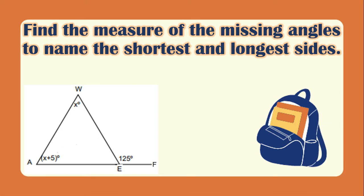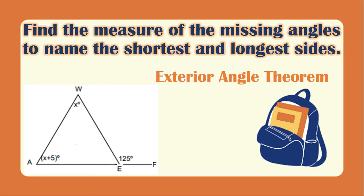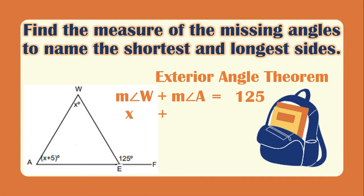Let's have another example. We need to find the value of x, but here we apply the exterior angle theorem: if we add the two remote interior angles we get the exterior angle. So the measurement of angle W plus angle A equals the exterior angle of 125 degrees. Angle W is x and angle A is x plus 5, so x plus x plus 5 equals 125.